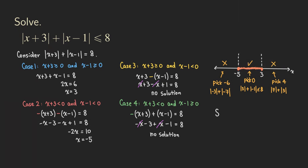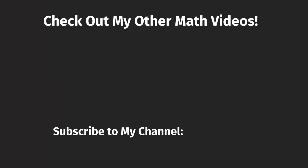So the solution to this inequality, just based on the shading, is the interval notation: bracket negative 5, 3 bracket. That is actually quite fun to solve! To help make math learning available to everyone, please share my videos and subscribe to my channel — it will give me support to make more videos. Let's work together to help students and children learn math more easily. Thank you.